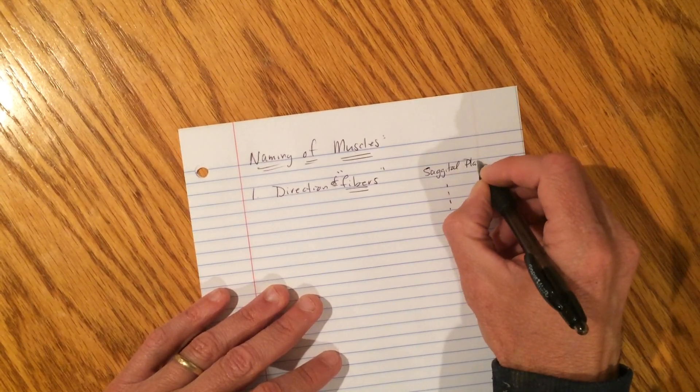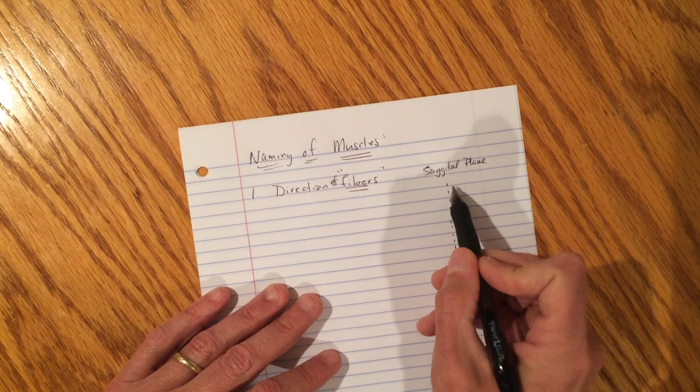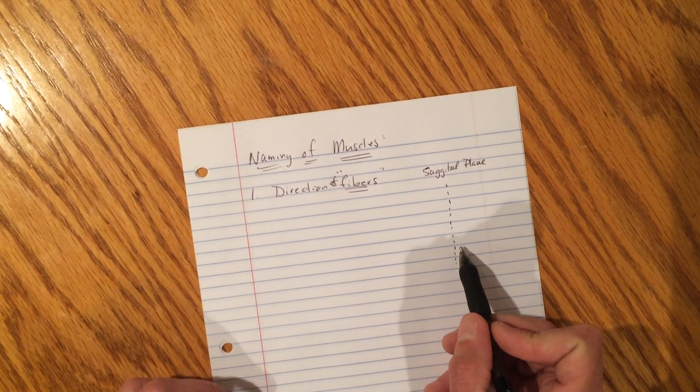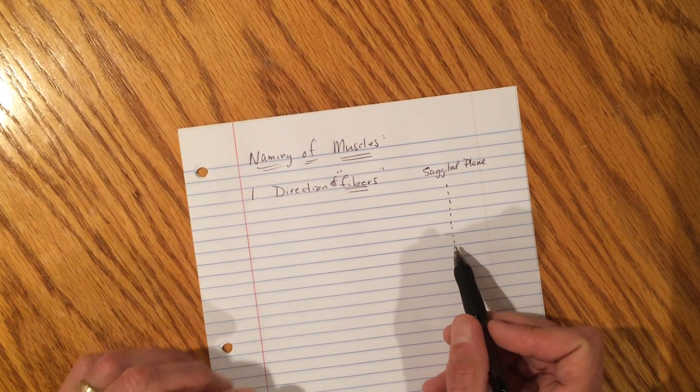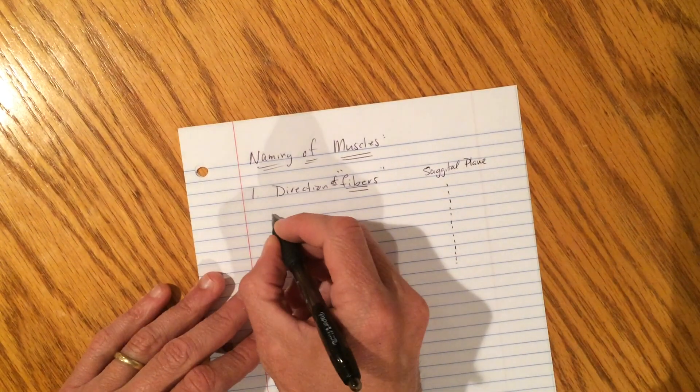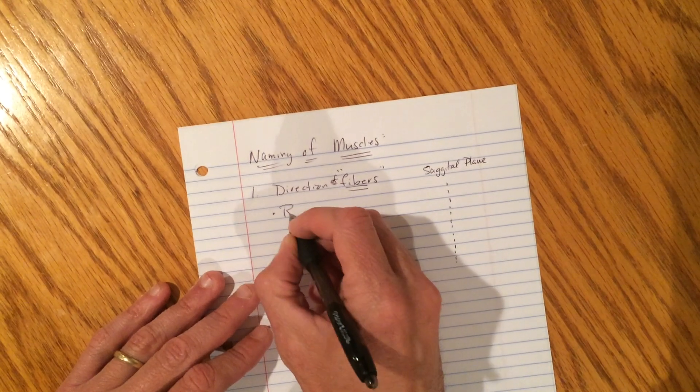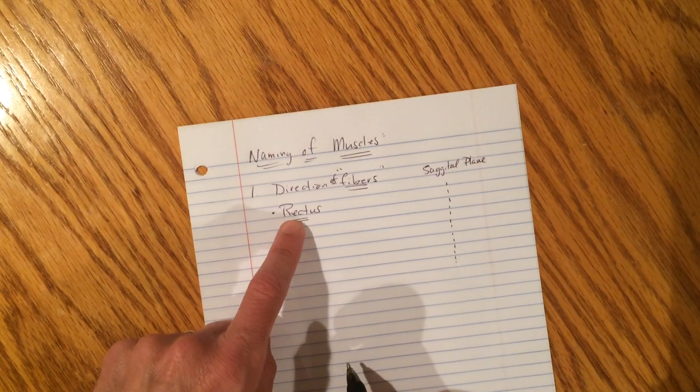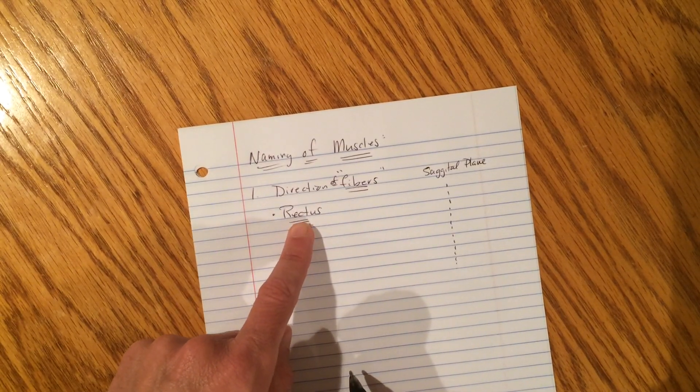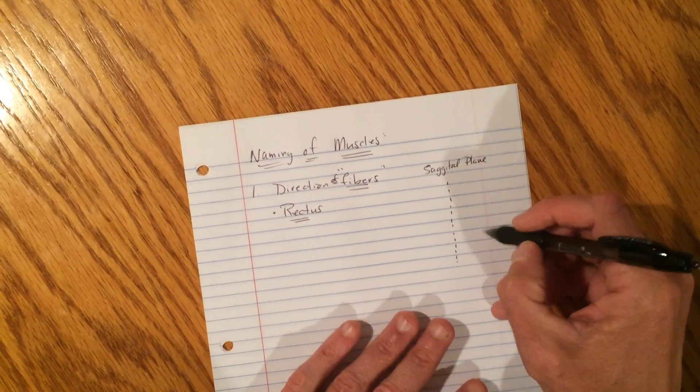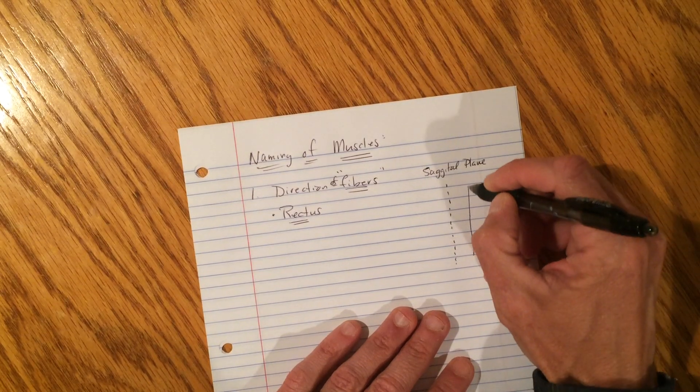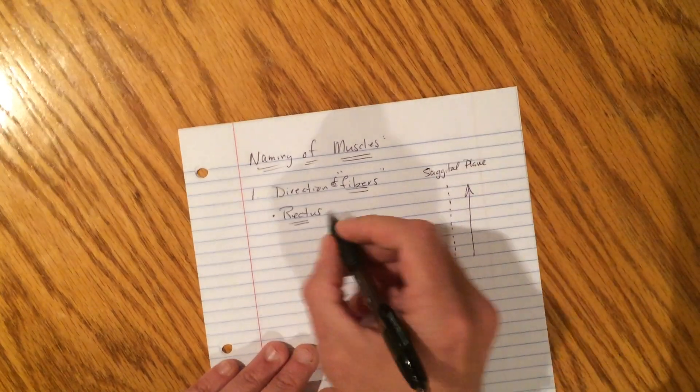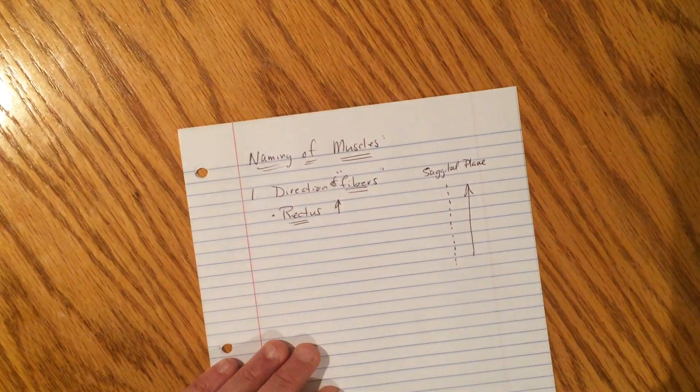So over here, I'm just going to put a dotted line over here, and this is going to represent the sagittal plane. Anybody remember what that means? The sagittal plane is the line, the imaginary line, that cuts you directly in half into two equal parts with the exception of internal organs. So let's go with the first one. You might see, as we go over muscles, the word rectus. Rectus refers to the direction of fibers, and rectus means straight up and down. So these fibers will be running straight up and down relative to the sagittal plane.